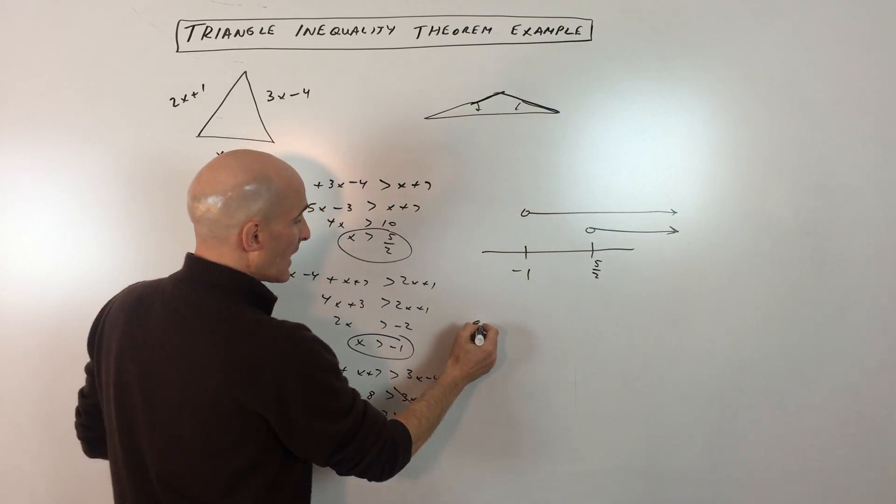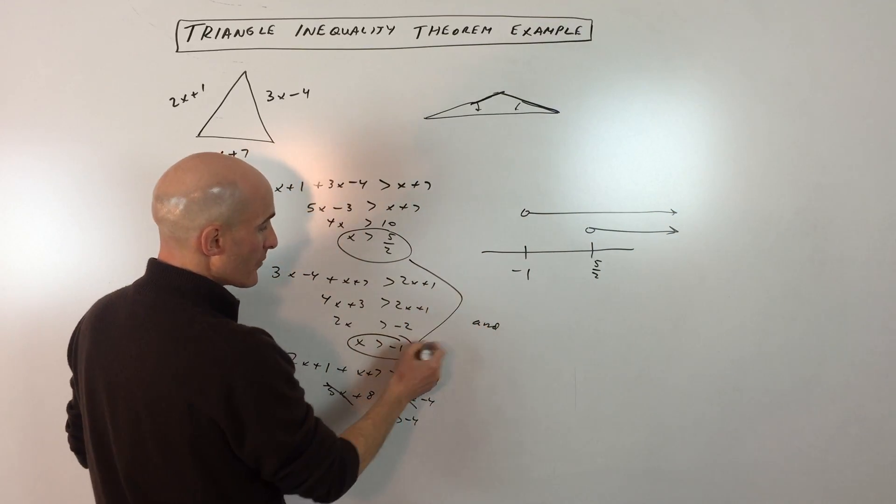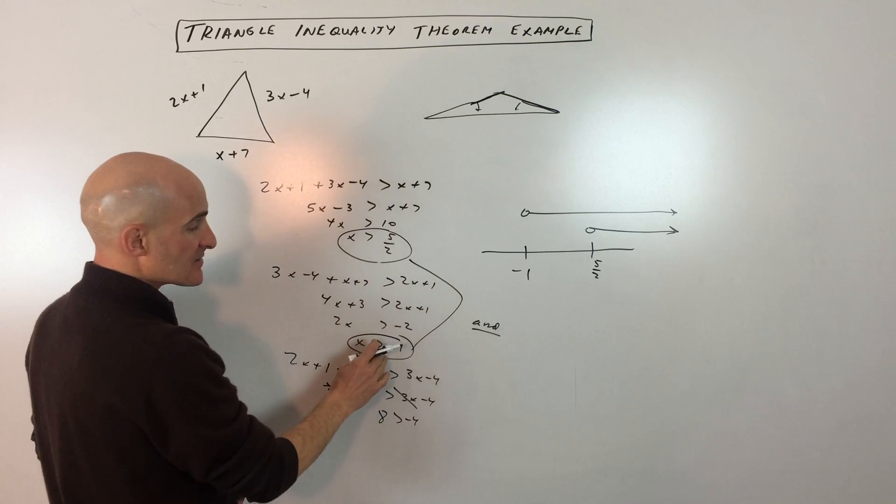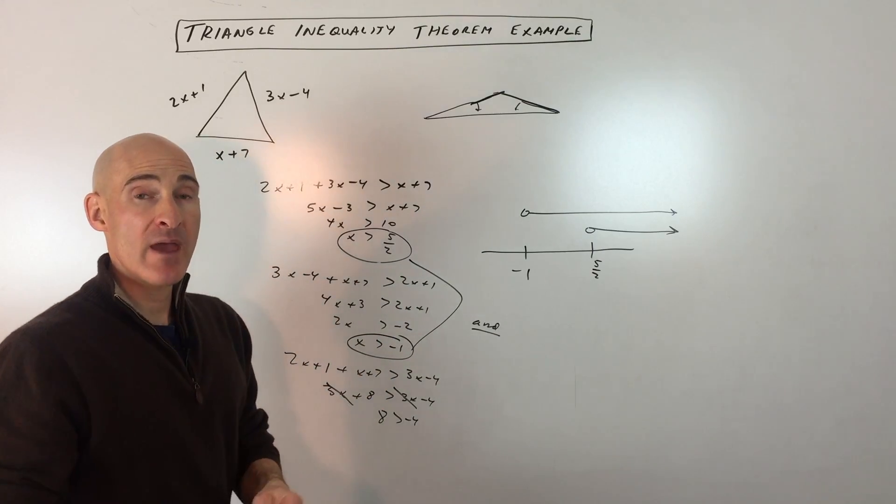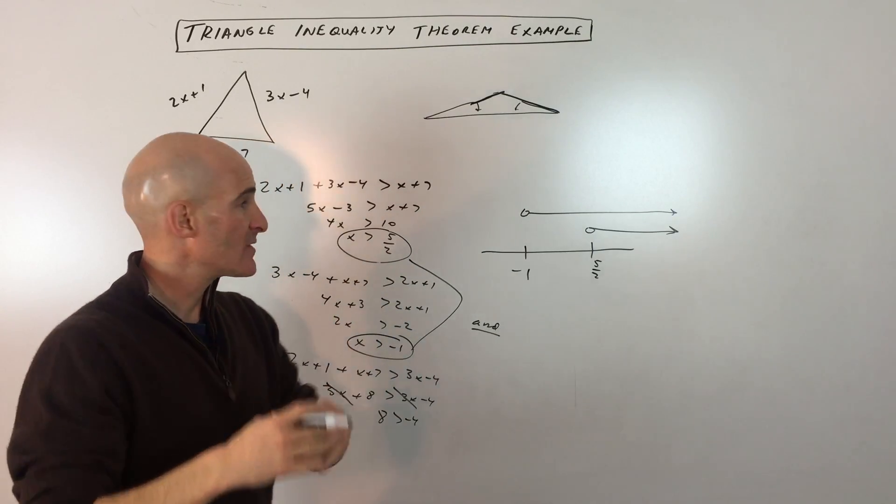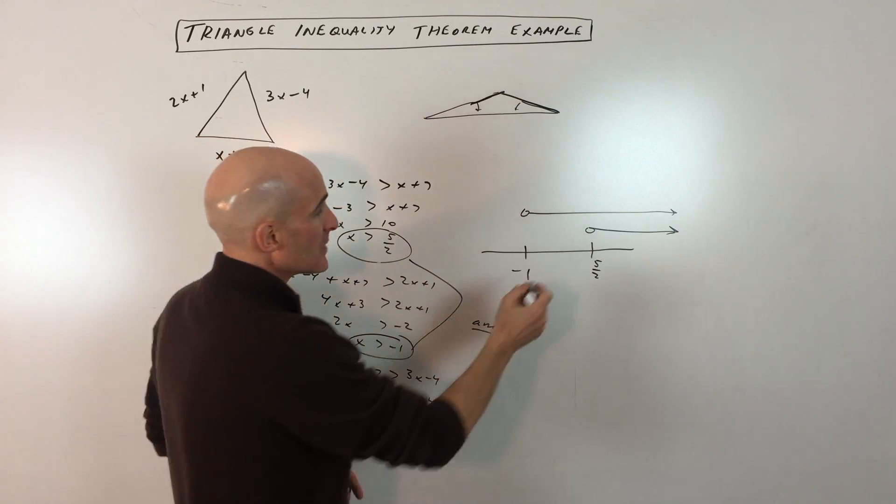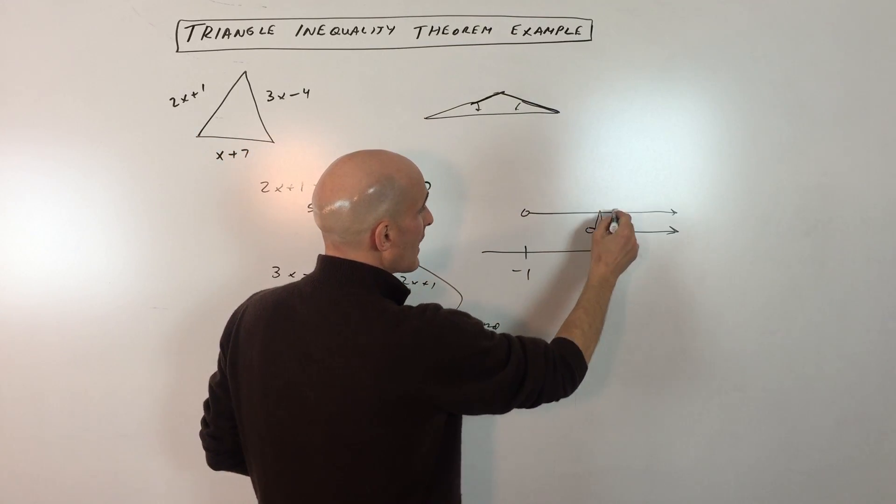Now when you think of the word and, it has to satisfy both of these requirements. It has to be greater than 5 halves and greater than negative 1. In math, and means the intersection, the overlap of the two sets. So where do they overlap? They overlap right here.